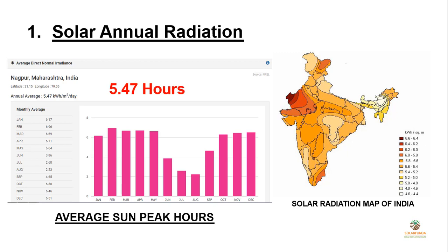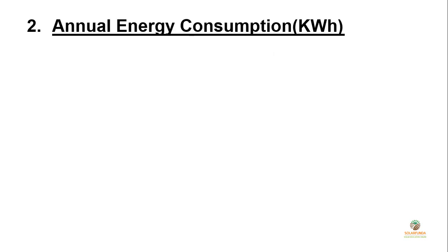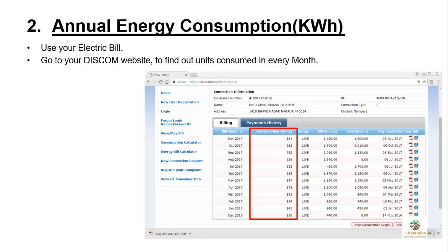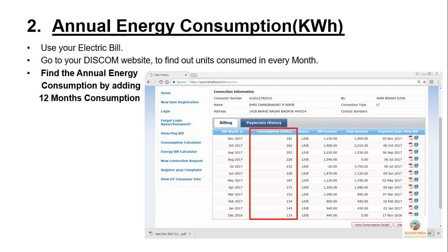I am taking my home rooftop solar project as an example. I need to find the annual solar radiation of Nagpur, which is 5.47 hours — you can find this data on Google or the NRLE website. For the second step, I find my annual energy consumption using my electric bill or my DISCOM website. Using my consumer number on the DISCOM website, I found my 12 months of consumption data. Adding them up gives a total of 2281 kWh per annum — that is how much energy my home uses every year.